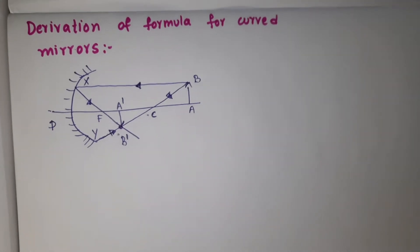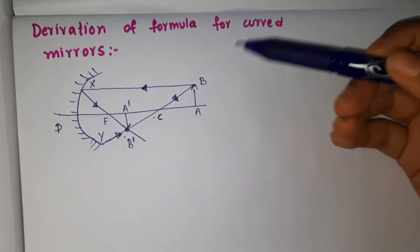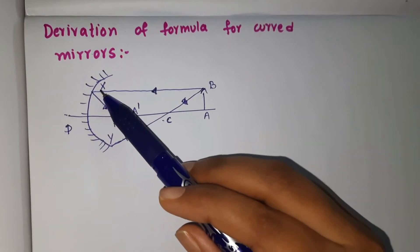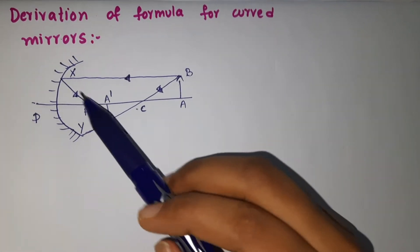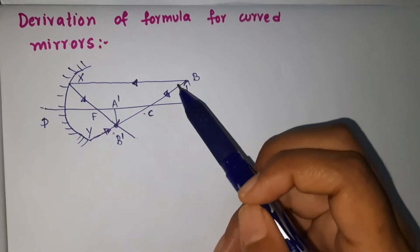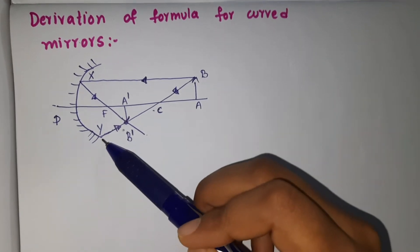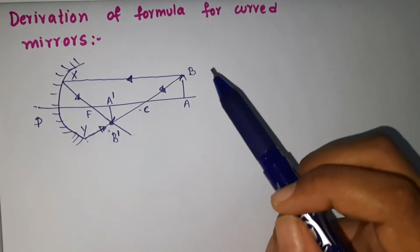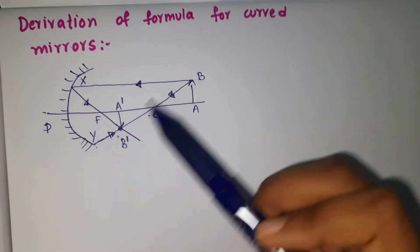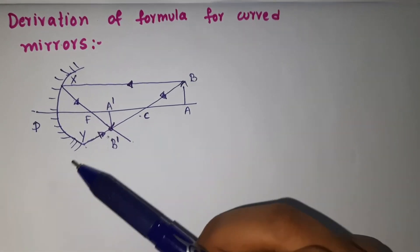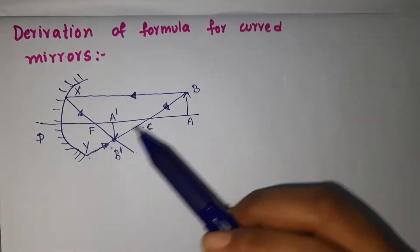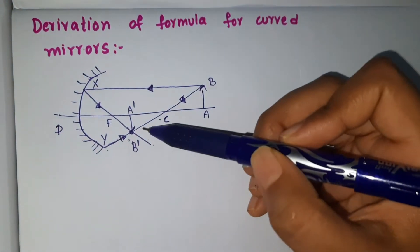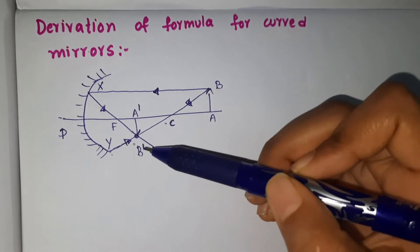Here you can see an object AB. A ray is passed from B to the mirror, touching at point X, and it is reflecting — passing through the focus. Another ray passes through the center of curvature, touching the mirror at Y, and reflecting back. I used the first and third laws of reflection. The rays X-B' and Y-B' intersect at point B', forming an image.